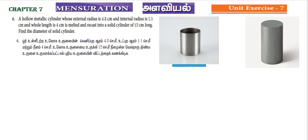So we have a hollow metallic cylinder. This is a hollow metallic cylinder. The radius - the external radius is 4.3 cm and internal radius is 1.1 cm. The length is height, so the height of the hollow metallic cylinder is 4 cm.